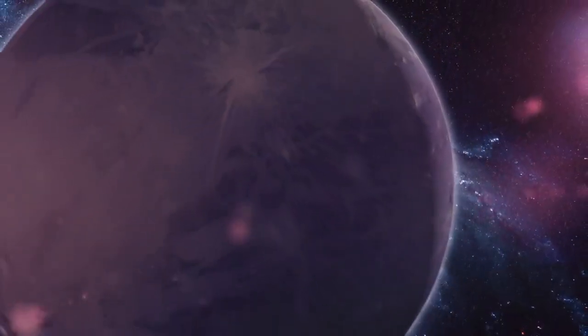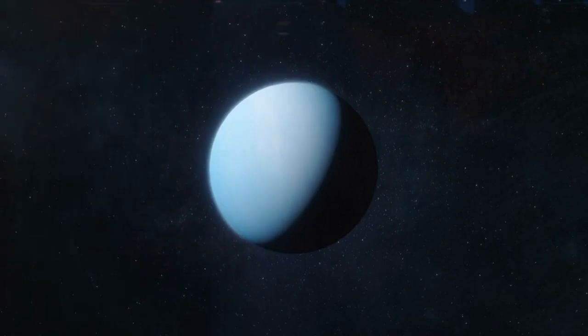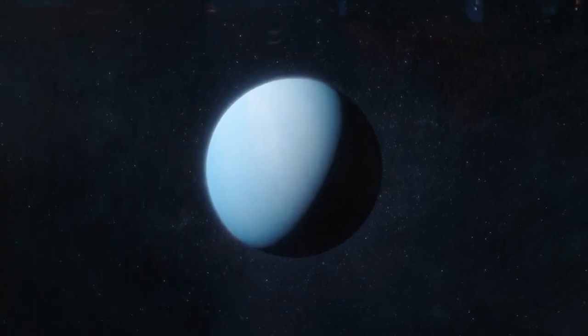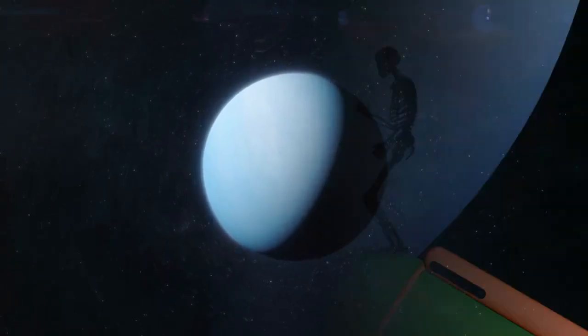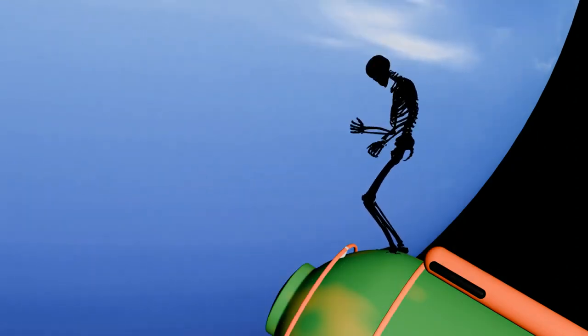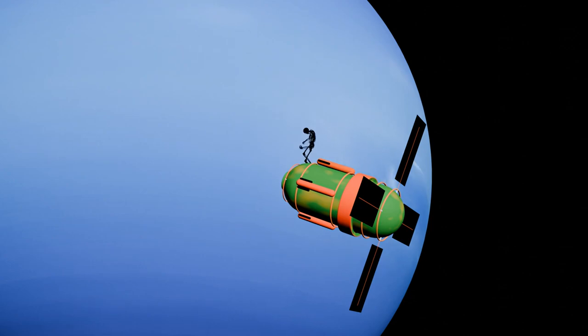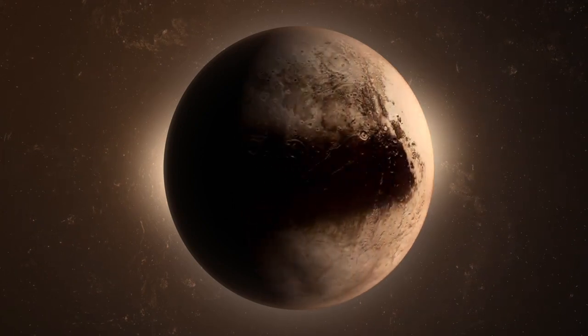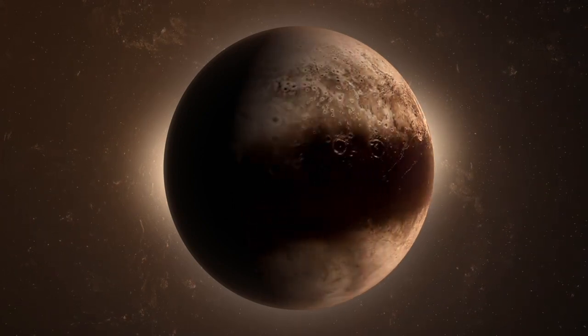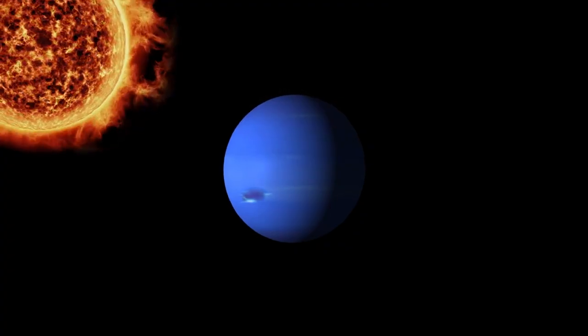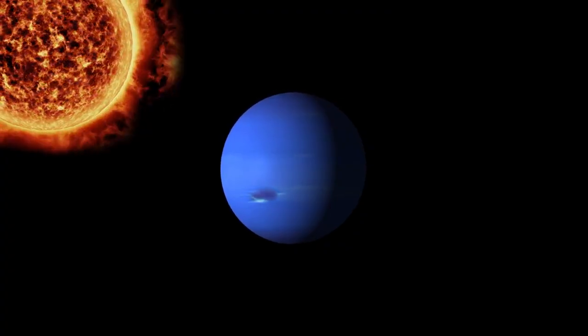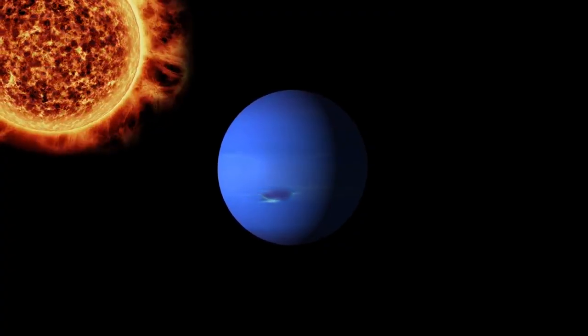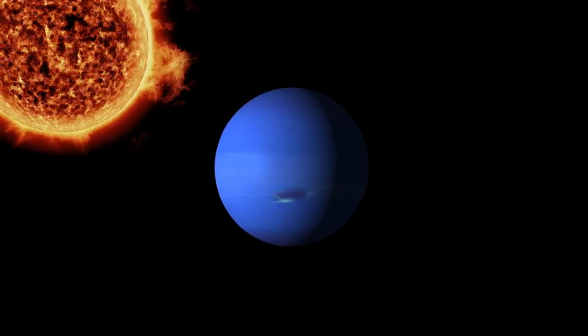So, could Pluto really collide with Neptune? While the chances are slim, the possibility cannot be entirely ruled out. Pluto and Neptune have orbits that cross paths, but due to their orbital resonance, they are locked in a gravitational dance that prevents them from colliding. This phenomenon is known as mean motion resonance, where Pluto orbits the sun twice for every three orbits of Neptune. As a result, even though their orbits intersect, their positions in their respective orbits are synchronized in such a way that they never come close enough to collide.